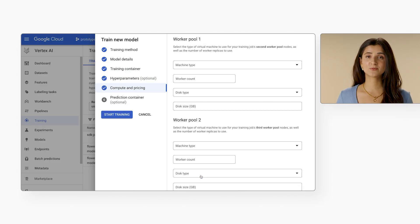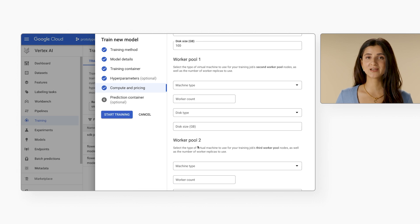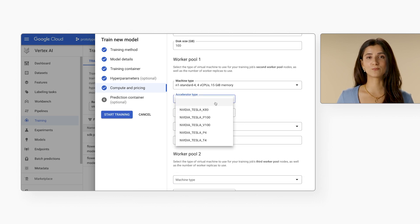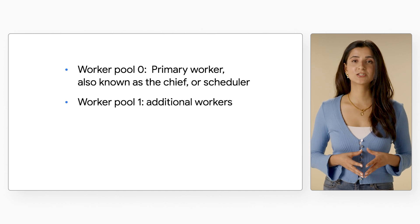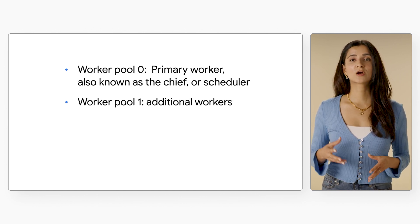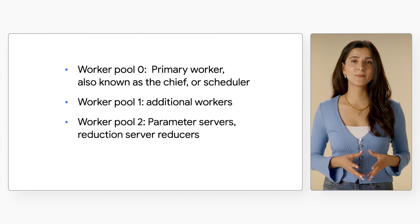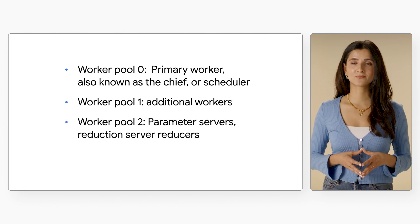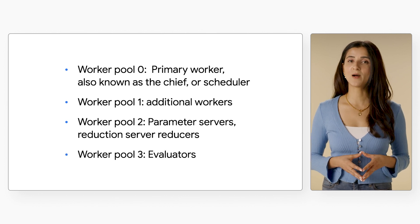Now, if you wanted to take your distributed training to the next level and use more than one machine, that's when you'll need to configure additional worker pools. Worker pool one is where you can add additional workers to your cluster. Worker pool two is where you can add parameter servers or reduction server reducers. Worker pool three is where you can add any optional evaluators. How you configure these different pools and the combination of workers, reducers, evaluators, etc. will depend entirely on the ML framework and distribution strategy you're using in your training code. A sample is linked below if you want to try out distributed training for the flower example on a single machine or on multiple machines.